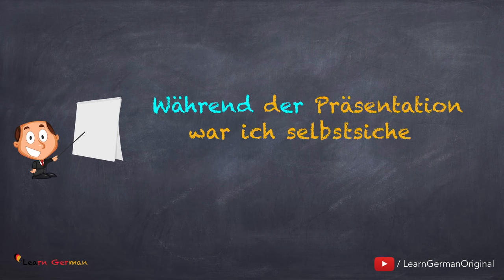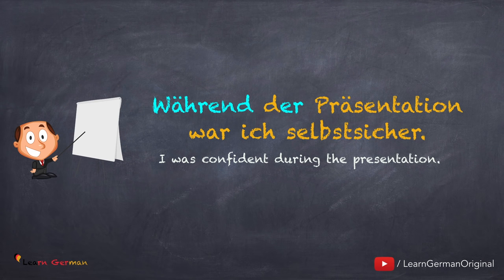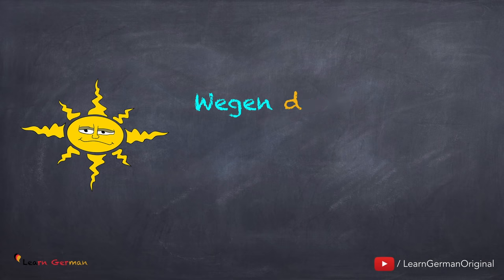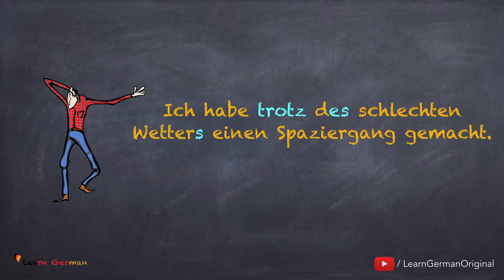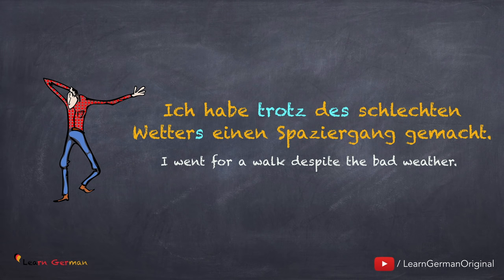Hier sind ein paar Beispiele: Während der Präsentation war ich selbstsicher. Hier ist 'während' die Genitiv-Präposition. Das nächste Beispiel ist: Wegen der Hitzewelle bleiben wir zu Hause. Und hier ist noch ein Beispiel: Ich habe trotz des schlechten Wetters einen Spaziergang gemacht.